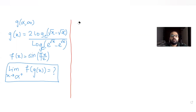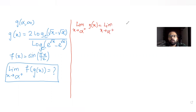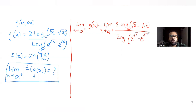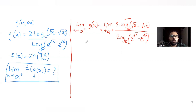To solve this, we first find the limit of g(x) as x tends to α. If we substitute x = α directly, the numerator becomes log(0) and the denominator becomes log(0), giving us an indeterminate form of not-defined over not-defined, which is 0/0. Whenever we have an indeterminate form, we apply L'Hôpital's rule.